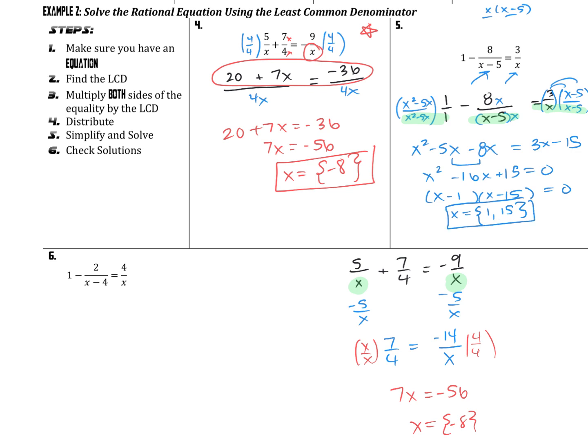We could plug both solutions back in to confirm they create a true equation. So to recap: we found a common denominator, multiplied each term by what it needed, dropped the denominators, and solved the numerator. We had to factor to find our two solutions, then checked they weren't extraneous. We write the final answer in set notation: smaller answer first, then larger answer.